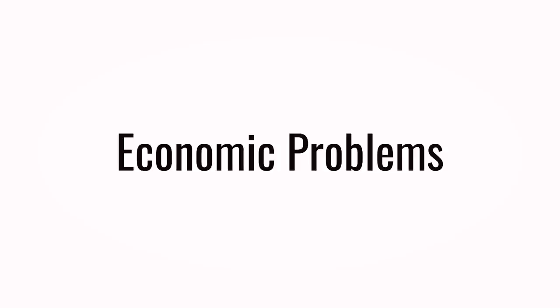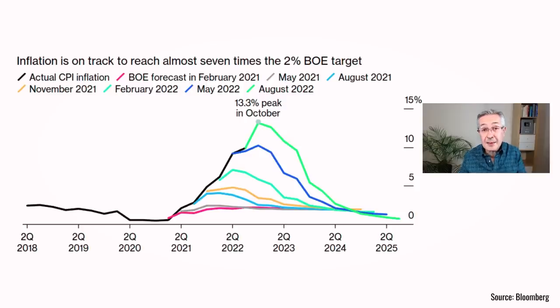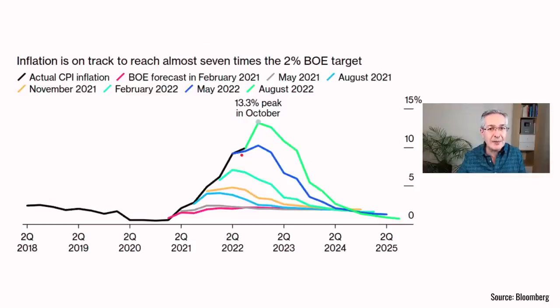Let's look at the economic problems we face in more detail. The really big problem is inflation. Here you can see the rate of inflation as the black line, and the coloured lines are successive forecasts from the Bank of England about what would happen to inflation in future. Those have been gradually revised upwards as inflation itself has increased, and the current estimate is that inflation will peak at a staggering 13.3%, which was the forecast made in August of this year.